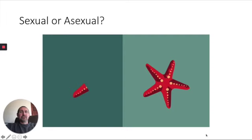Starfish can reproduce in much the same way, by fragmentation. So that little piece of starfish can grow into a new starfish. And the starfish that lost that piece will grow that piece back. So again, fragmentation, asexual reproduction.